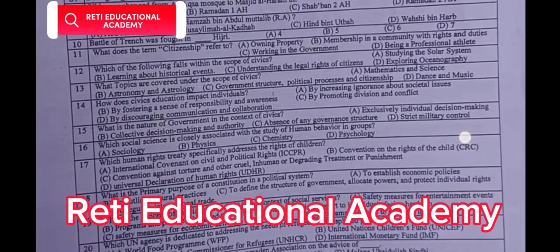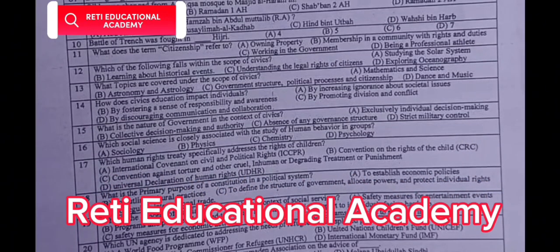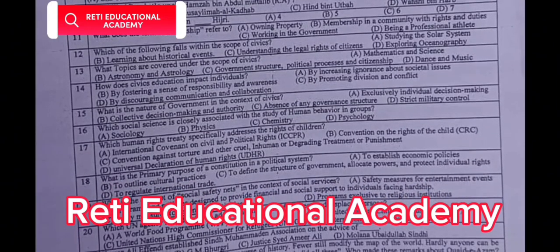Question number thirteen: What topics are covered under the scope of civics? A. Mathematics and science, B. Astronomy and astrology, C. Government structure, political processes and citizenship, D. Dance and music. The correct answer is C, government structure, political processes and citizenship. Question number fourteen: How does civics education impact individuals? A. By increasing ignorance about societal issues, B. By fostering a sense of responsibility and awareness, C. By promoting division and conflict, D. By discouraging community collaboration. The correct answer is B, by fostering a sense of responsibility and awareness.